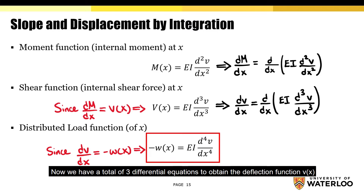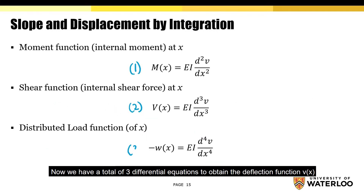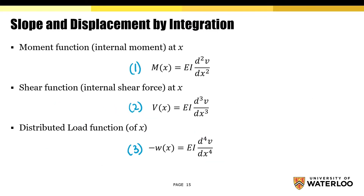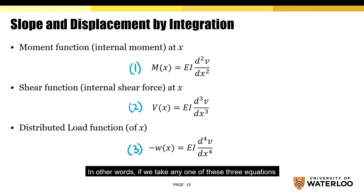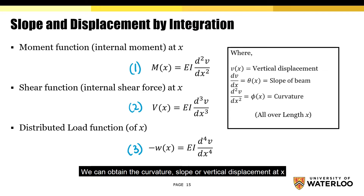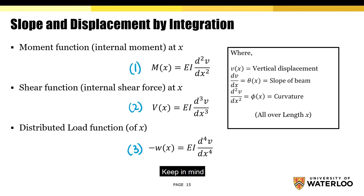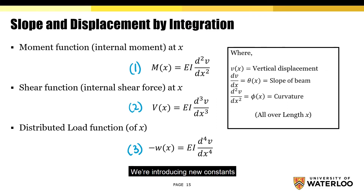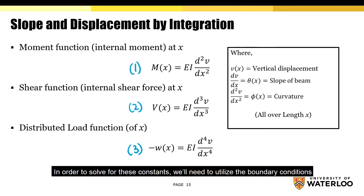Now we have a total of three differential equations to obtain the deflection function v(x). In other words, if we take any one of these three equations and use consecutive integrations, we can obtain the curvature, slope, or vertical displacement at x. Keep in mind, every time we integrate an equation, we're introducing new constants. In order to solve for these constants, we'll need to utilize the boundary conditions.